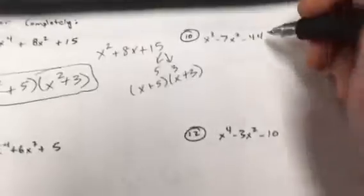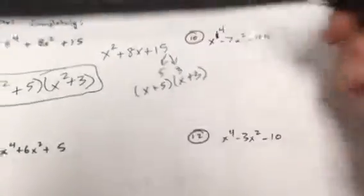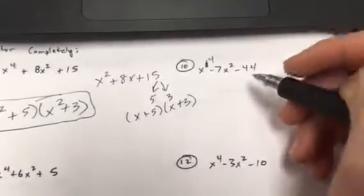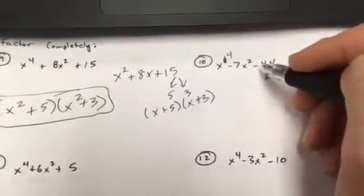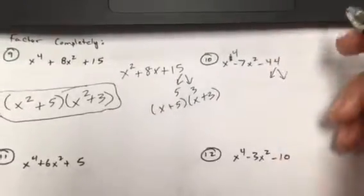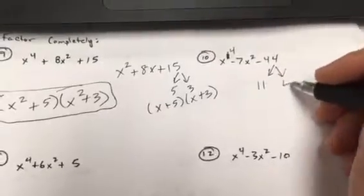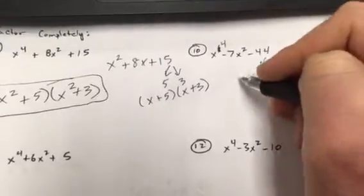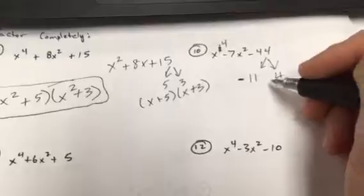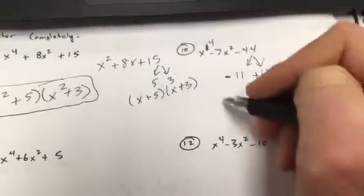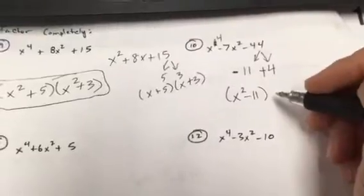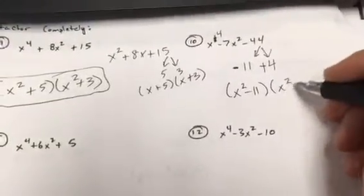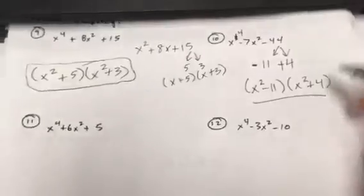I made a little boo-boo here on 10. Change that to the fourth power. So same thing. What multiplies to 44? Because it's negative, differs by 7. That would be 11 and 4. The middle term is negative, so the bigger factor, 11, is negative. That makes this a positive 4. You're going to have x squared minus 11 as a factor. The other one is x squared plus 4. Ta-da!